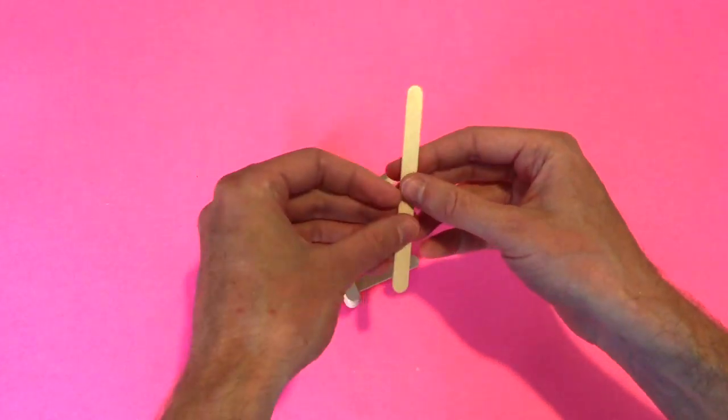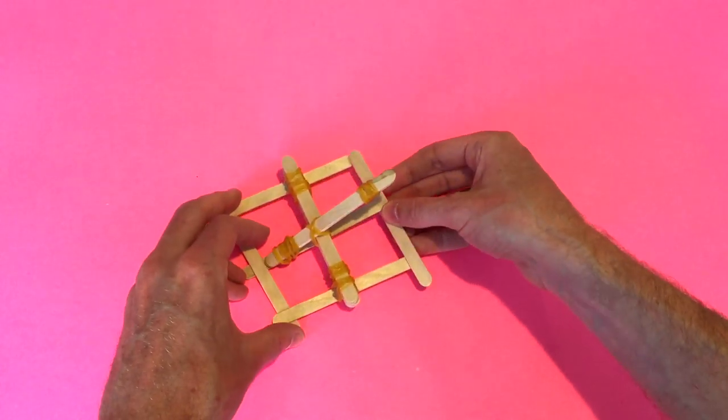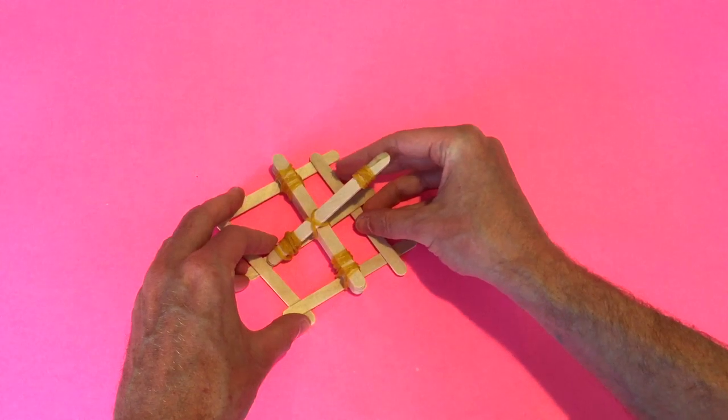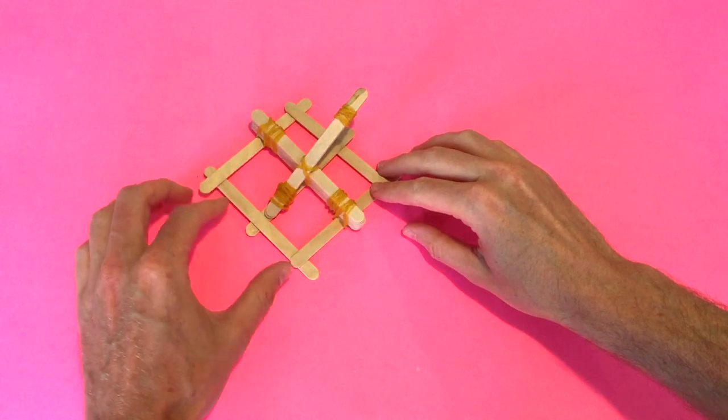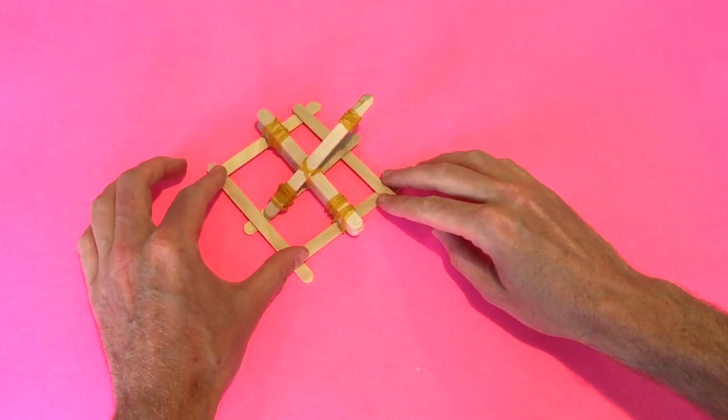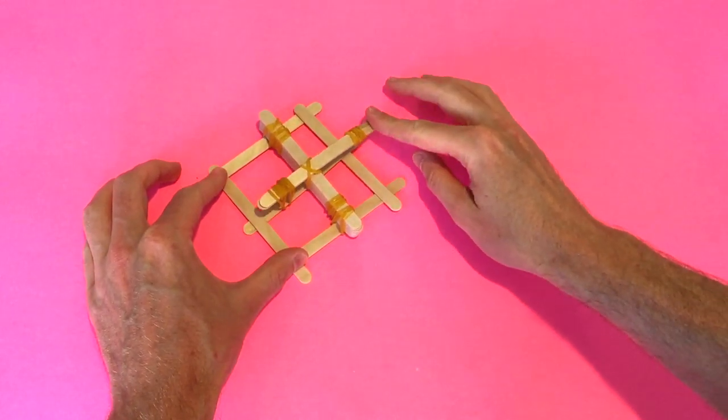You can also do the same at the other end. So this time it's going to go on top of the sides and underneath the middle. So now you can continue and put some rubber bands around the corners to lock those in, or you can just hold it down with your fingers. It'll still do a great job.